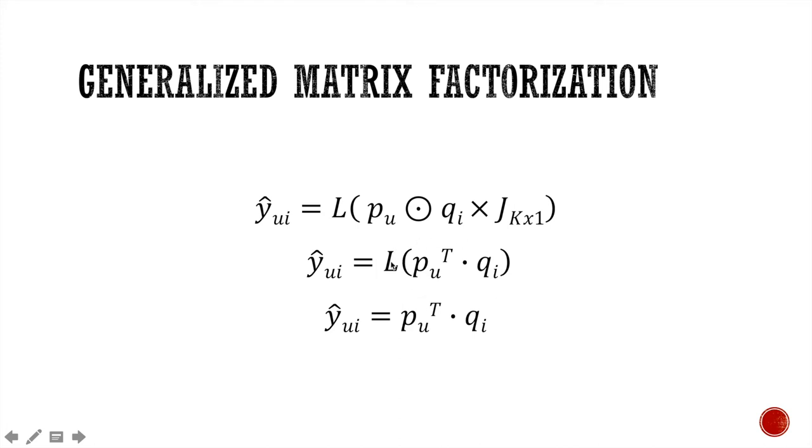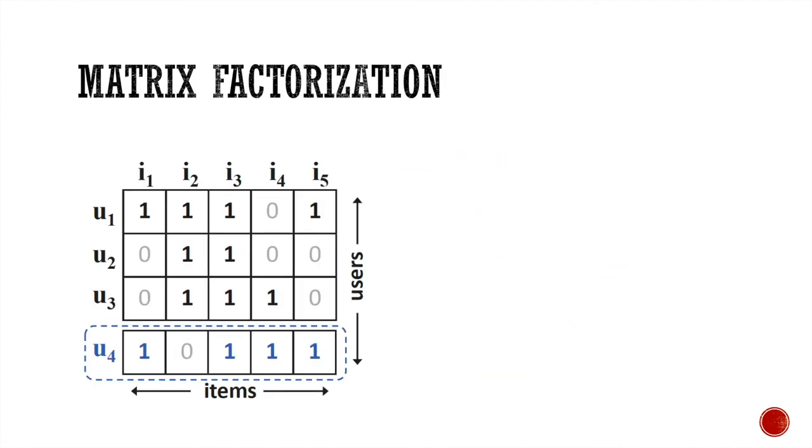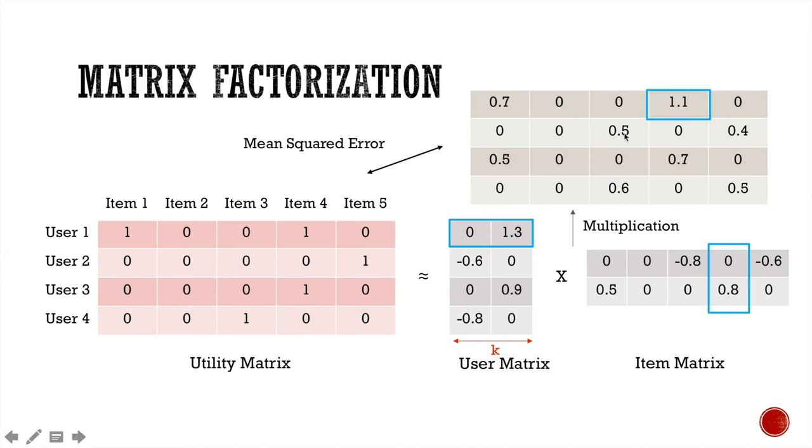Since L is a linear activation function, the input equals to the output. So we have this final form, y-hat_ui equals to the dot product of p_u and q_i. And this is the exact same form of matrix factorization that I have shown you previously. The predictive value for each of the entries is the dot product of the corresponding user latent vector and item latent vector.